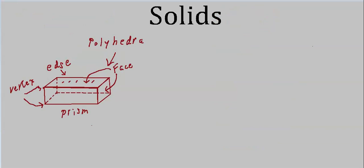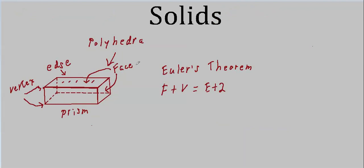Now let's get back to the parts of a polyhedron: the edge, the face, and the vertex. There's a theorem that relates all these together. It's called Euler's Theorem: the number of faces plus the number of vertices equals the number of edges plus two. F + V = E + 2.